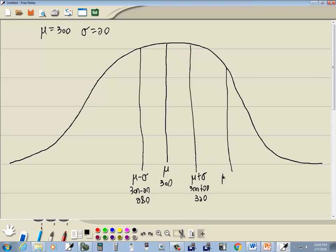This next bar will be mu plus two standard deviations. And what we do is we keep adding, see how we keep adding 20 over and over? 280, 300, 320. This will be 340. And then this one will be mu plus three standard deviations, three sigmas, which will be 360.